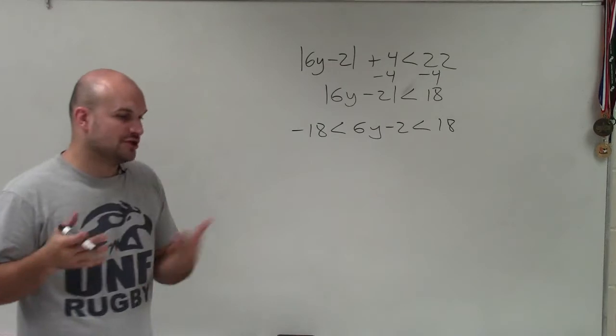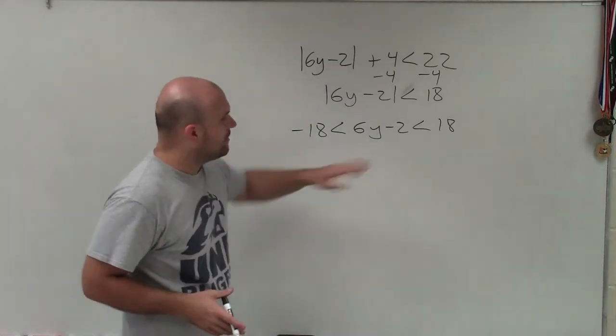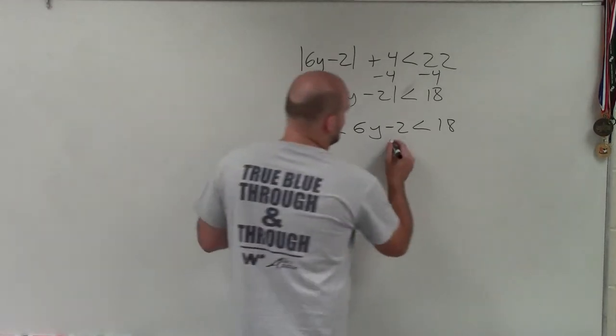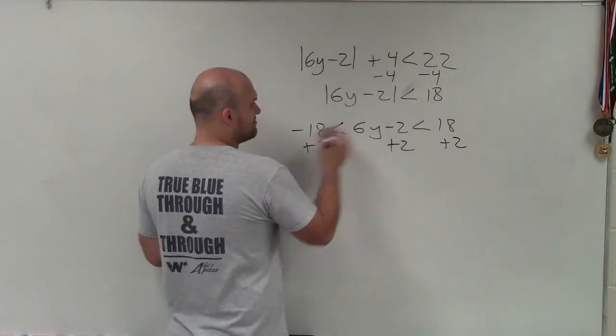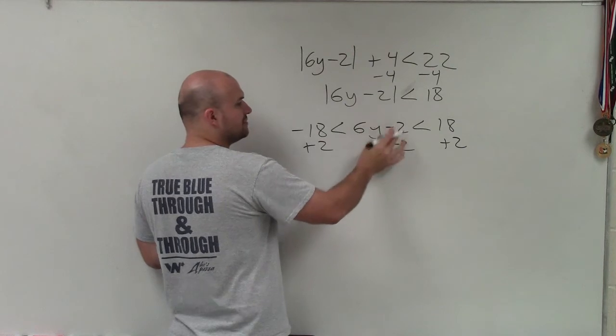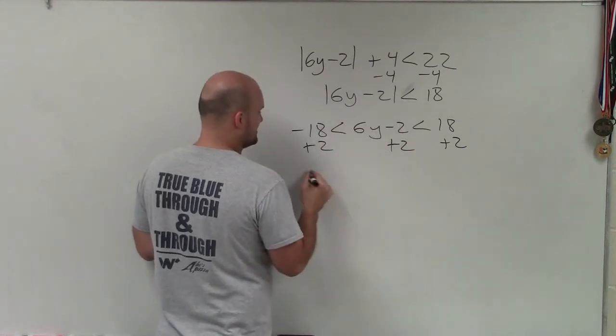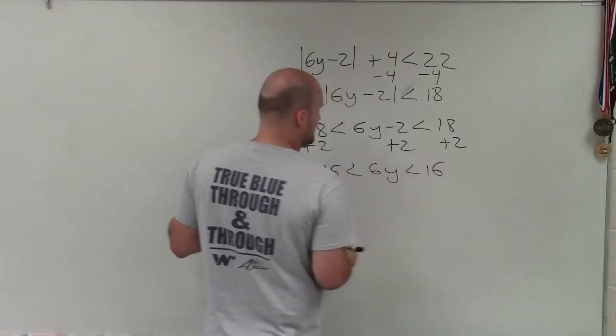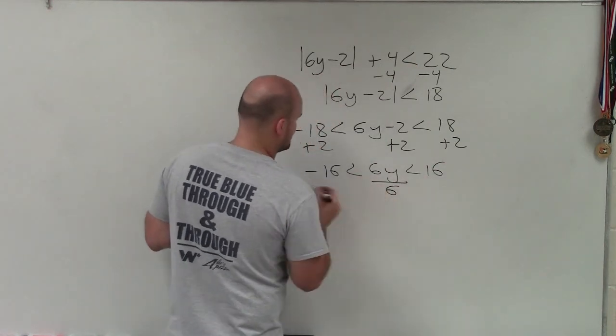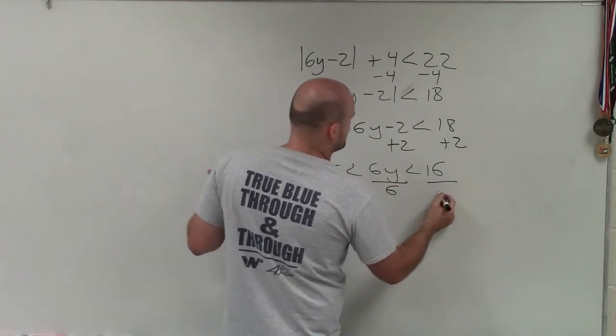When it's less than, you create an and compound inequality. Now I just solve this like any other compound inequality. I use my inverse operations, and whatever I do to isolate the variable, I do those operations on both sides. So I have negative 16 is less than 6y, which is less than 16. Then I divide by 6 on all three parts.